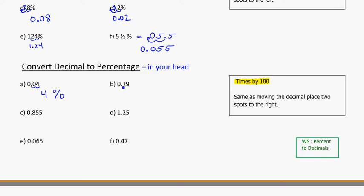Here, moving the 0.29 two spots over becomes 29%.